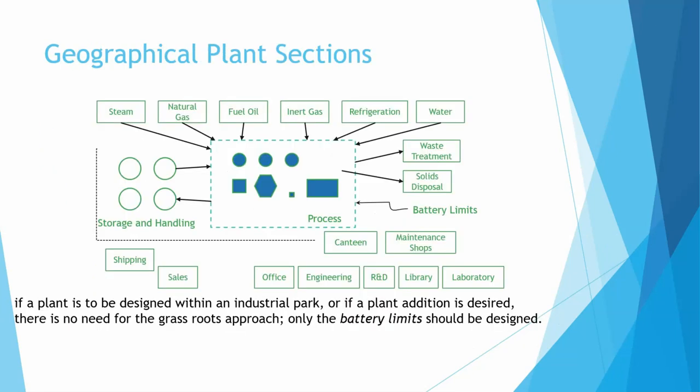Let's talk about grassroots and battery limits. If you want to completely construct this chemical plant from the beginning, that is going to be a grassroots operation. If you only want to add a chemical plant or an addition to a chemical plant, that is known as a battery limit. You're going to have to just worry about whatever is in this dotted rectangle here.